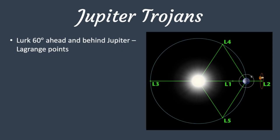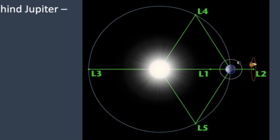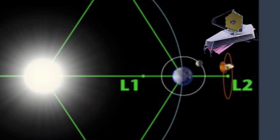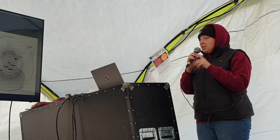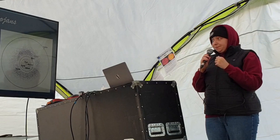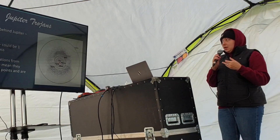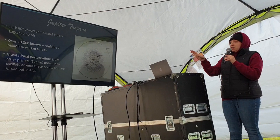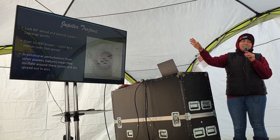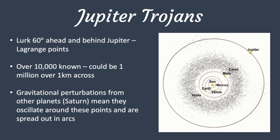These are the Lagrange points, just so you can see where they are. L4 and L5 are where the Jupiter Trojans sit. In this diagram you can imagine the Sun in the middle — instead of Earth, it's Jupiter. L2 is where the James Webb Space Telescope is, in case you're wondering. We know of about 10,000 asteroids sitting at the L4 and L5 points of Jupiter, but there could be just as many asteroids orbiting with Jupiter as there are in the main asteroid belt. Gravitational nudges from Saturn in particular mean that instead of sitting exactly at these gravitational stable points, they oscillate around, which is why they're spread out in these arc shapes.